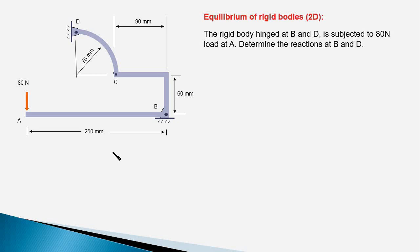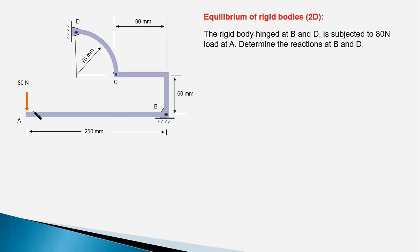Let's examine the data given in the problem statement. Here is a rigid body — a frame which consists of two members DC and CBA. These two members are pinned together at point C. The whole rigid body is supported at points D and B with pin supports, and a force of 80 newtons is exerted at point A. We have to find the reaction forces at points D and B.